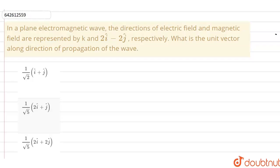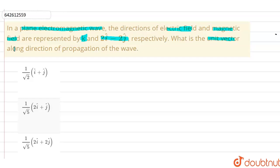In this question, in a plane electromagnetic wave, the directions of electric field and magnetic field are represented by k-cap and 2i minus 2j cap respectively. We have to find out what is the unit vector along the direction of propagation of the wave.